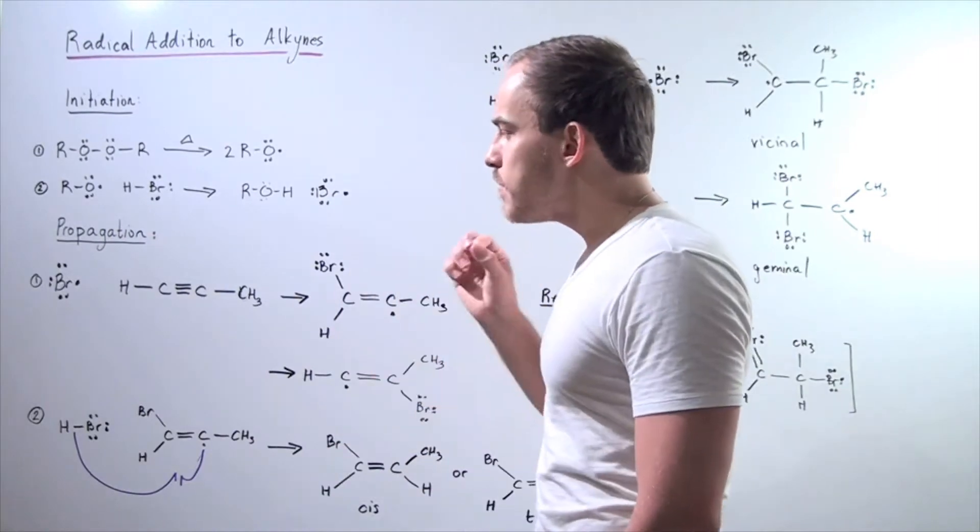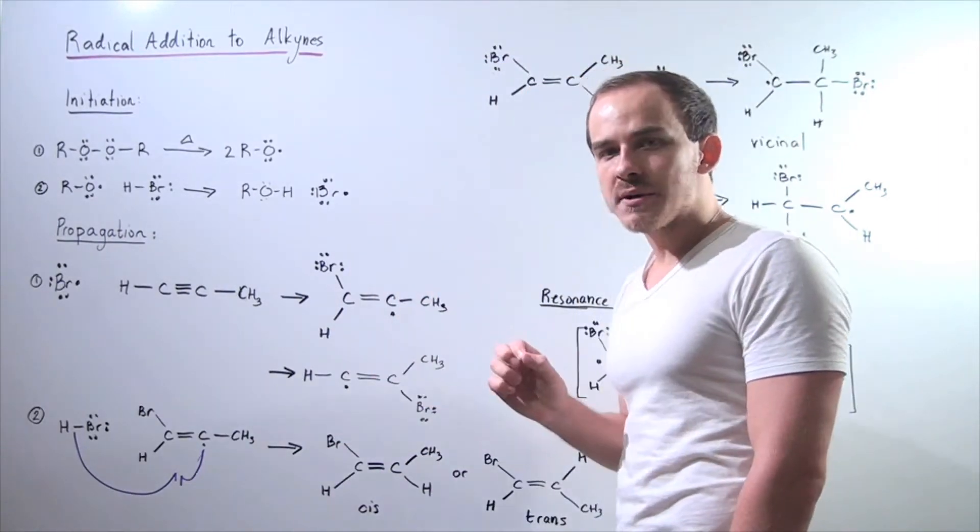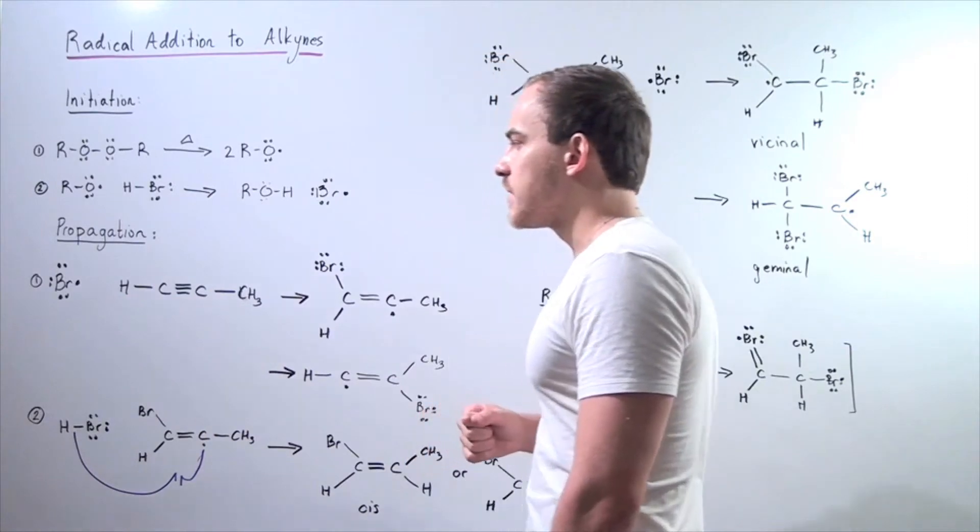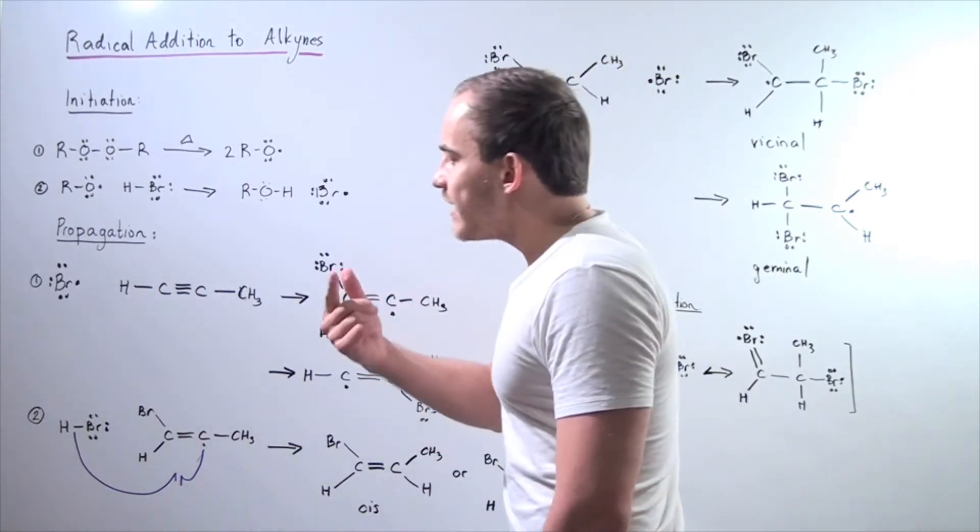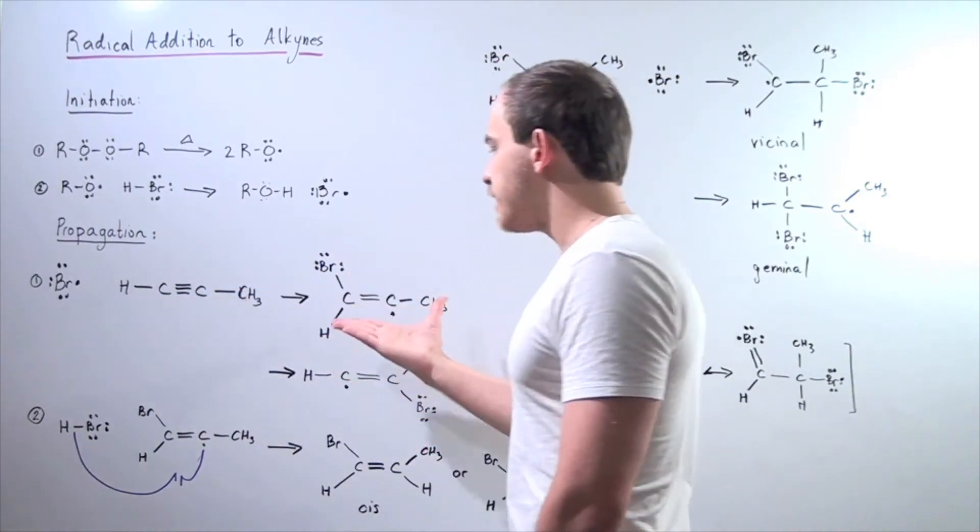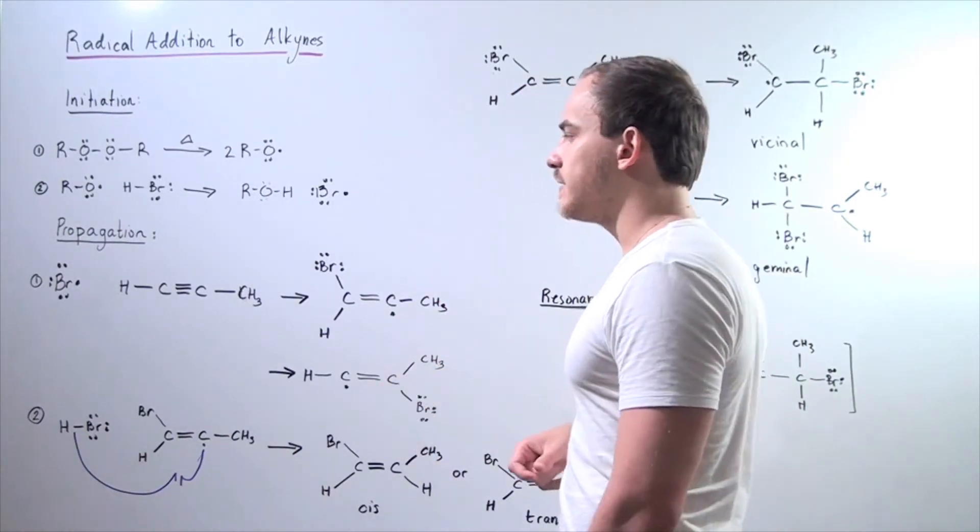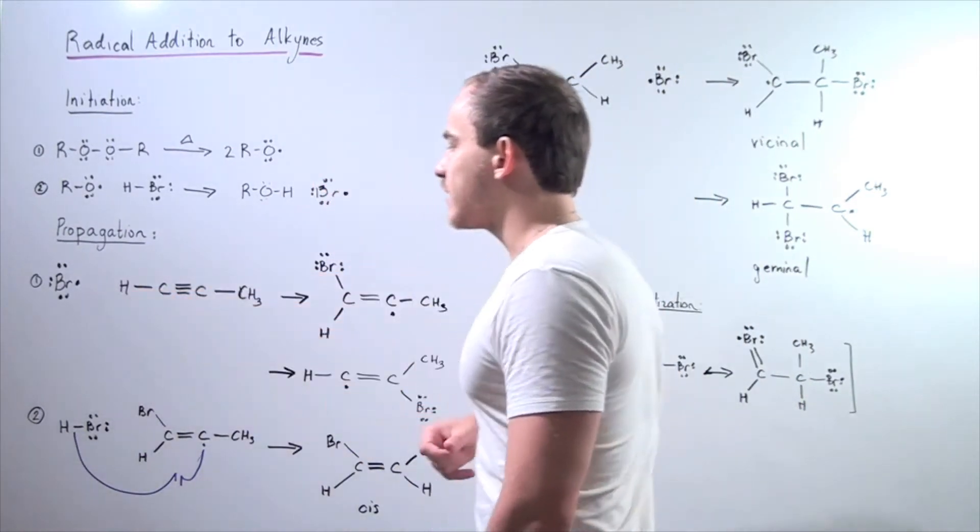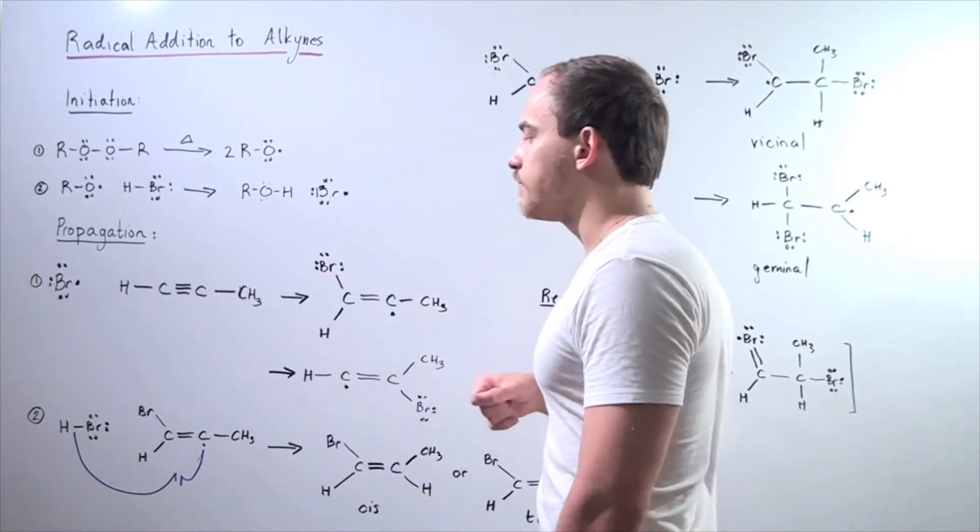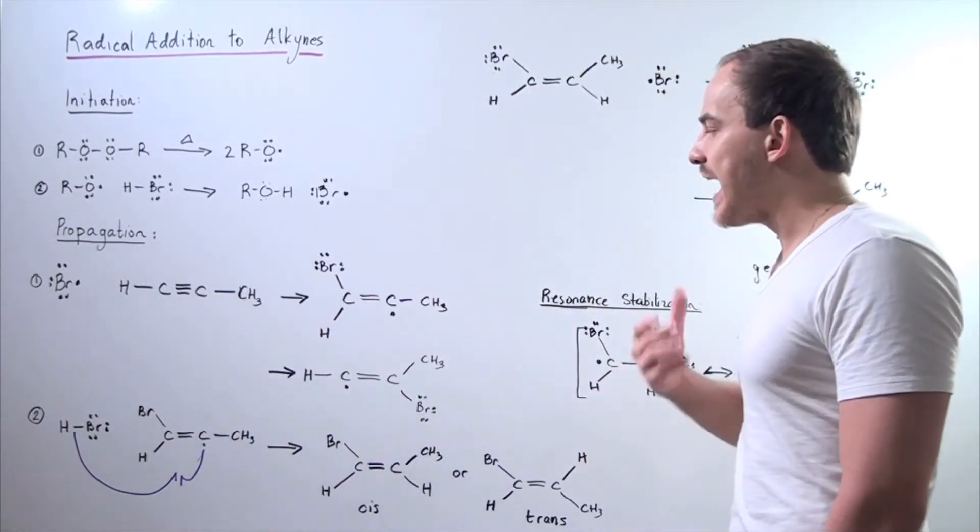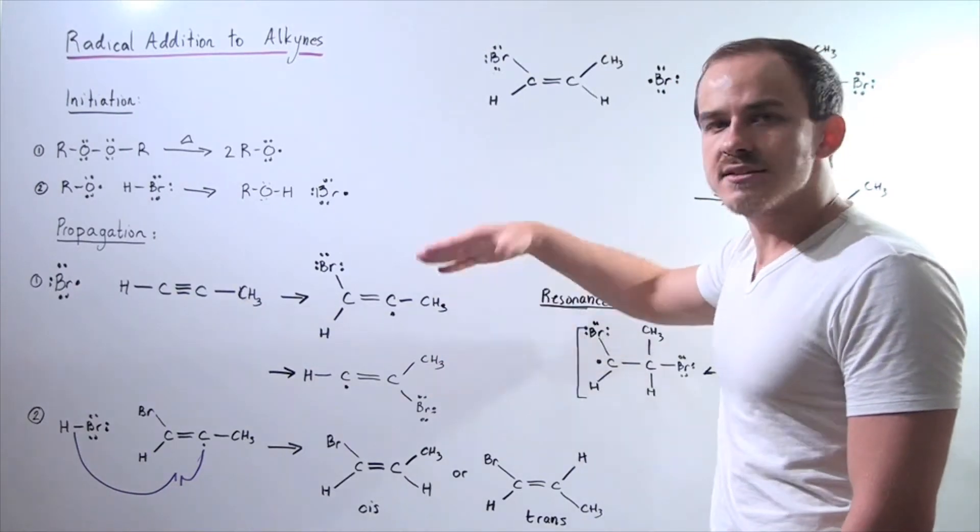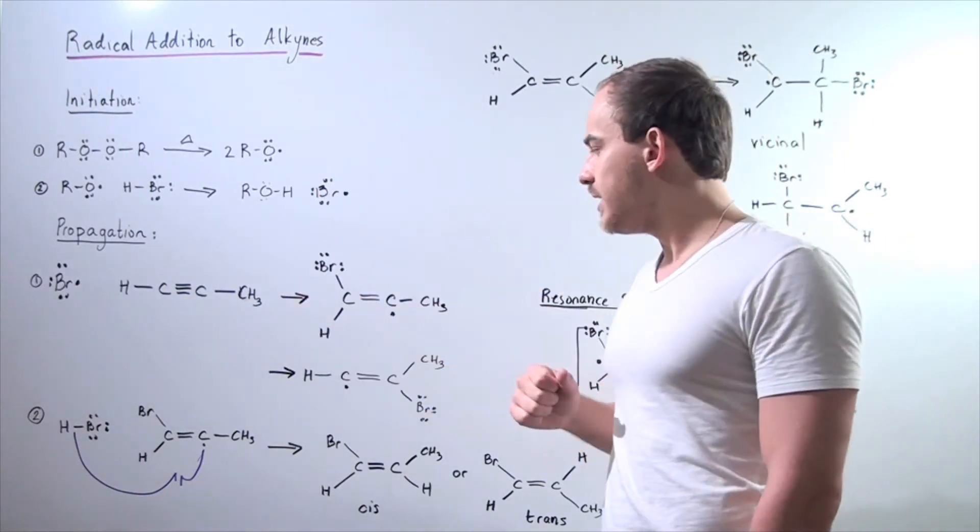Now the question remains, onto which carbon atom will this chain-carrying atom add? Will it add onto this carbon forming the following intermediate, or will it form this intermediate where the bromide radical adds onto this carbon? To answer that question, we have to resolve which one of these is the more stable intermediate.